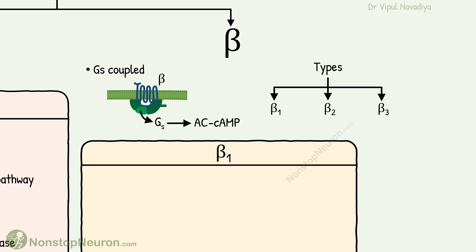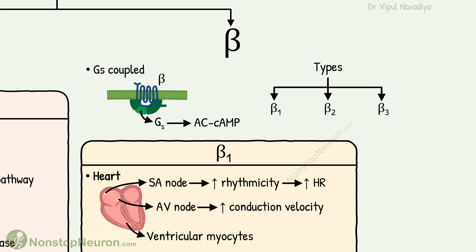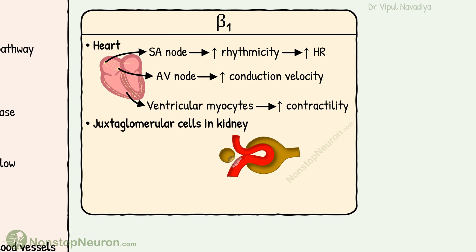Let's first see beta-1. They are very famous for being present in the heart. In the SA node, they increase rhythmicity, so heart rate is increased. In the AV node and conductive pathway, they increase conduction velocity. In ventricular myocytes, they increase contractility, so the force of contraction is increased. They are also found on juxtaglomerular cells in the kidney, where stimulation of these receptors causes renin release.